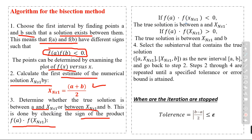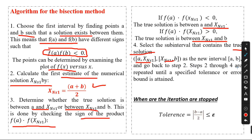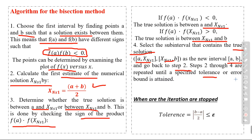If f(a) · f(x1) < 0, the true solution is between a and x1. If f(a) · f(x1) > 0, the true solution is between x1 and b. Select the sub-interval that contains the true solution — either [a, x1] or [x1, b] — as the new interval [a, b], and go back to step two.